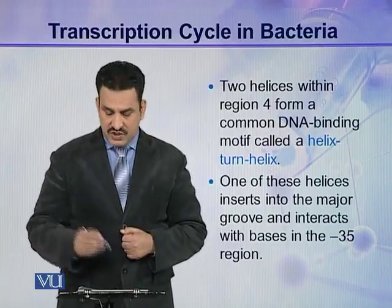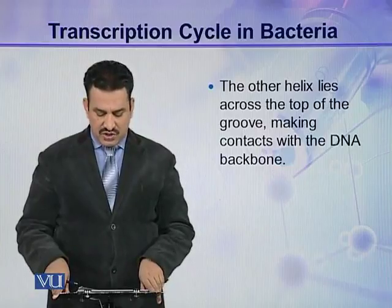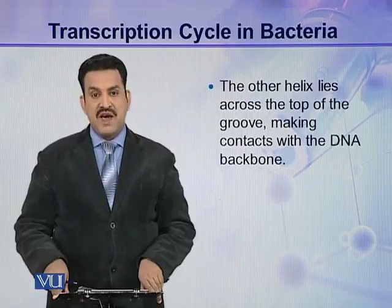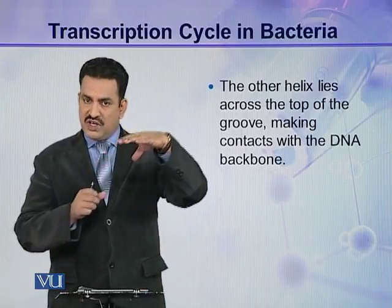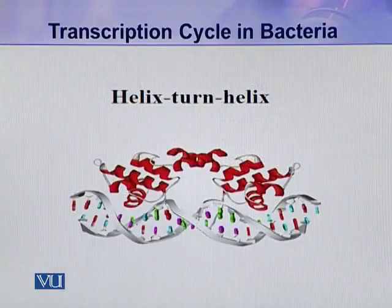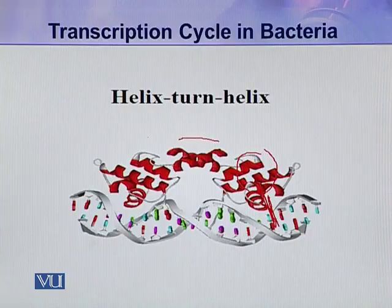The first helix inserts into the major groove and interacts with the bases of the minus 35 region. The other helix lies across the top of the groove, making contacts only with the DNA backbone. So in summary: helix one interacts with the bases of the minus 35 region, and helix two interacts only with the backbone of the DNA.